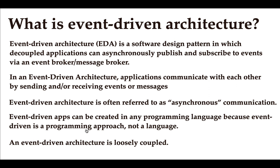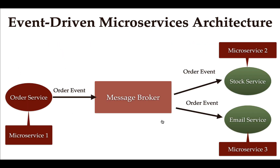Event-driven architecture is loosely coupled. Consider our event-driven microservice architecture — it has three microservices: order service, stock service, and email service, and all three microservices are independent of each other, meaning they are loosely coupled.